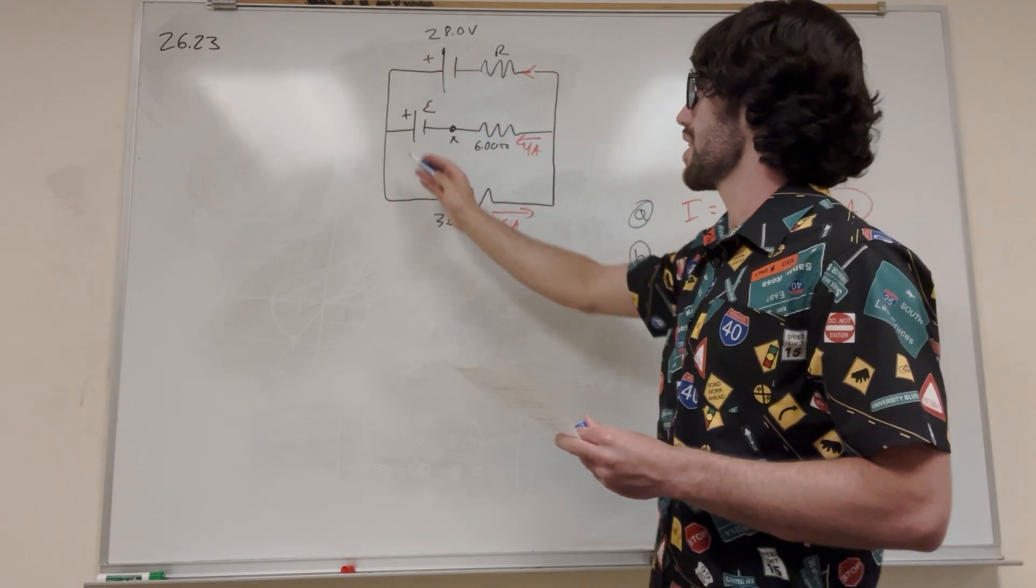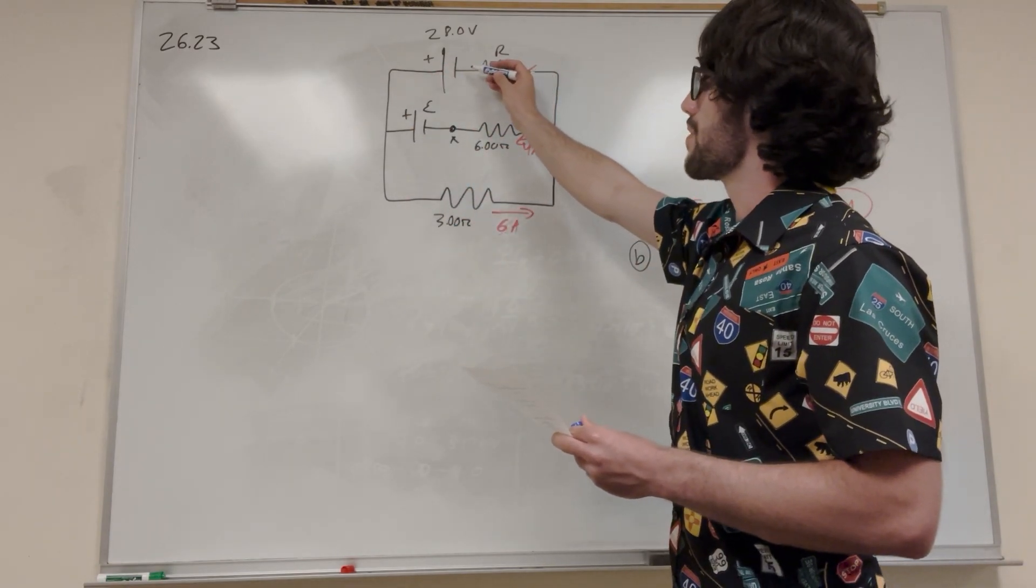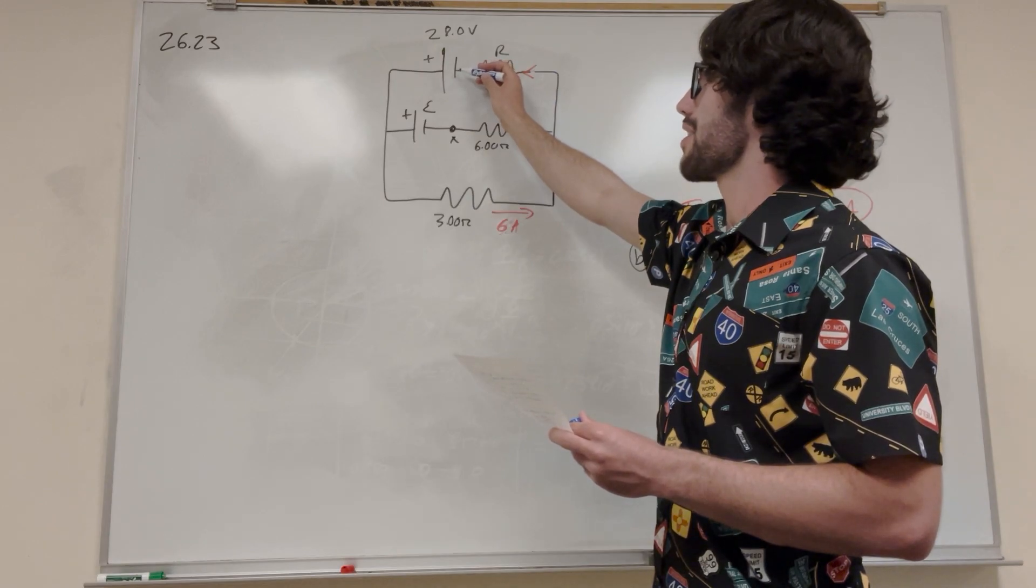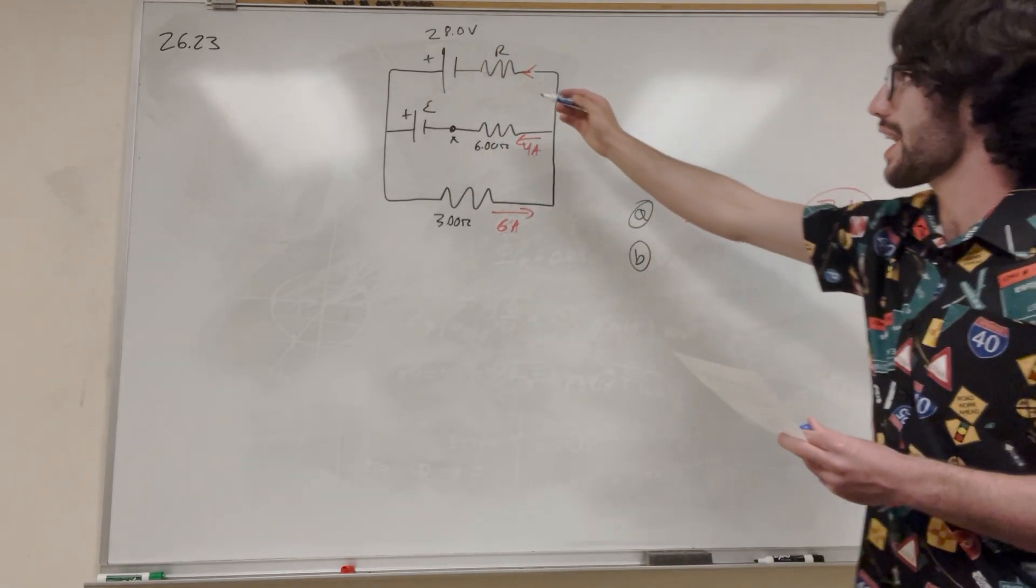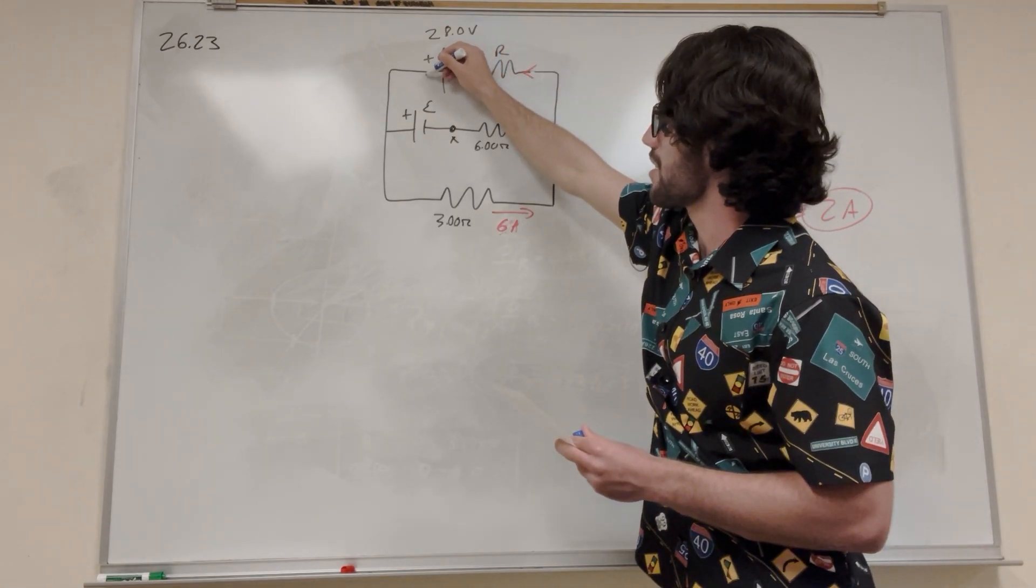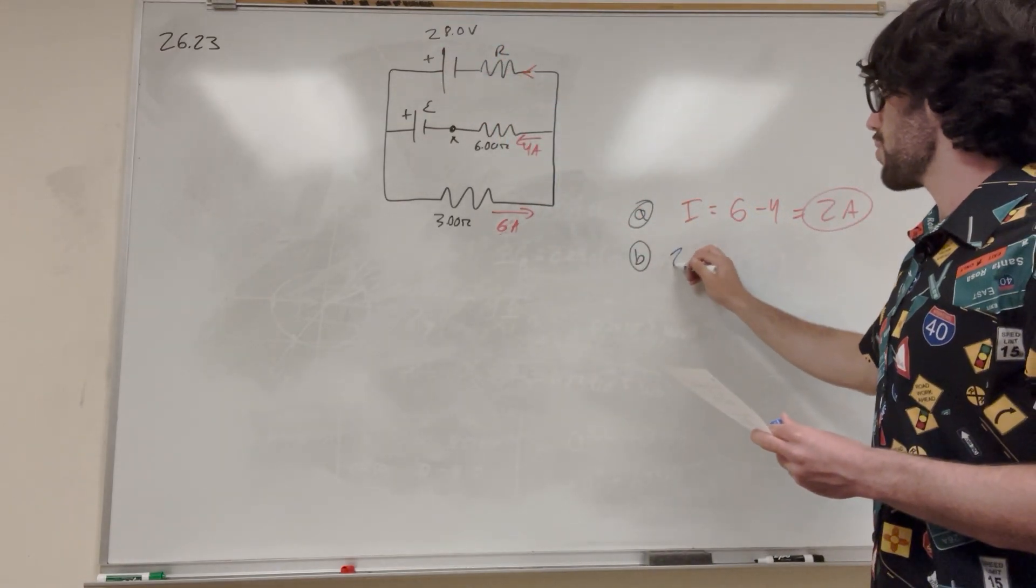We're going to have a voltage of 28 volts, and then as we go through each resistor, before we reach the battery again, we have to have 0 volts. So let's go ahead and present that. So we're starting out, point here, let's say right here, we have 28 volts.